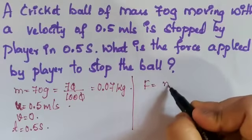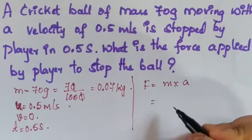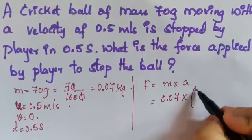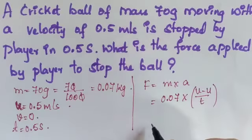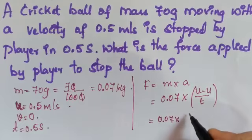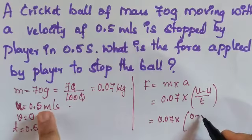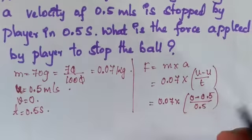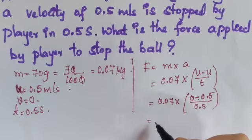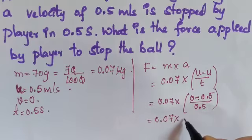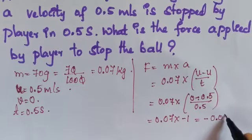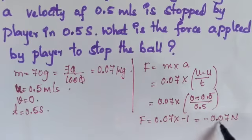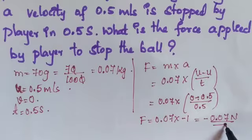Force equals mass into acceleration. Substituting directly: mass is 0.07 into acceleration V minus U divided by T, which is 0.07 into (0 minus 0.5) divided by 0.5. Since 0.5 divided by 0.5 is 1, we get 0.07 into minus 1, giving minus 0.07 Newton.